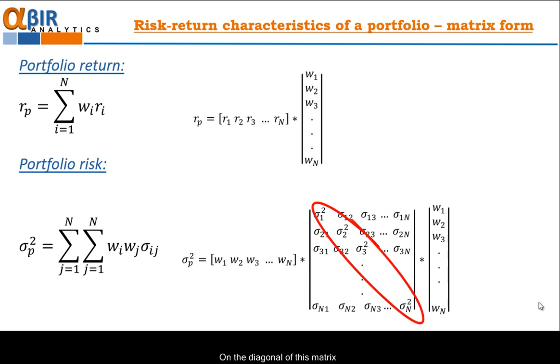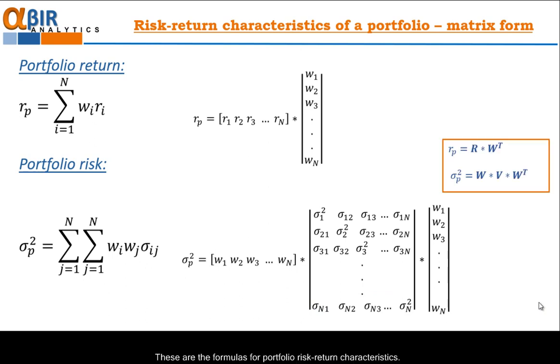The central part of the risk formula is this important matrix here. We call it variance-covariance matrix. On the diagonal of this matrix are the variances of all stocks. Variance of the first asset, variance of the second asset, of third asset and so on until n. Then the first row presents the covariance between asset 1 and asset 2, between 1 and 3, etc. to n. The same for next row. I also can present the short form of matrix formulas here. These are the formulas for portfolio risk return characteristics.